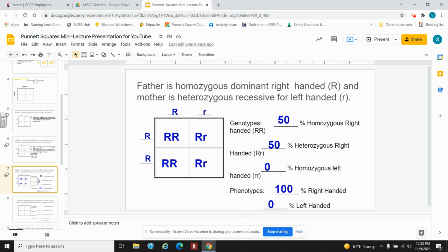In this case, two of the four boxes are homozygous right, 50%. Two of the four boxes are heterozygous right, 50%. Remember, as long as one allele is dominant and present, the dominant phenotype will be expressed. Zero of four boxes are homozygous left.